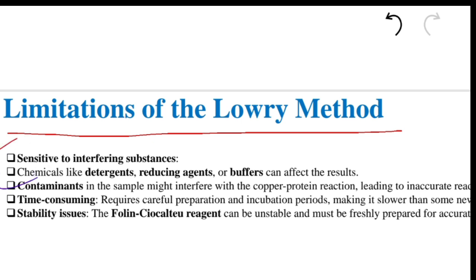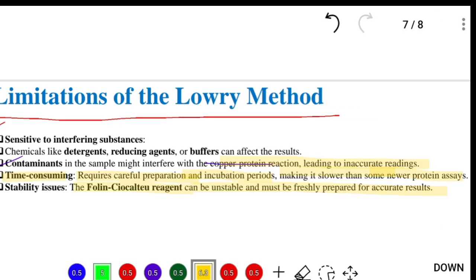Contaminants in the sample might interfere with the copper-protein reaction, leading to inaccurate readings. It is time-consuming, requiring careful preparation and incubation periods, making it slower than some newer protein assays. There are also stability issues. The Folin-Ciocalteu reagent can be unstable and must be freshly prepared for accurate results.